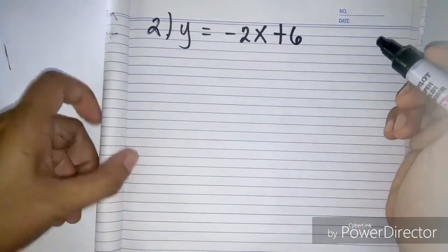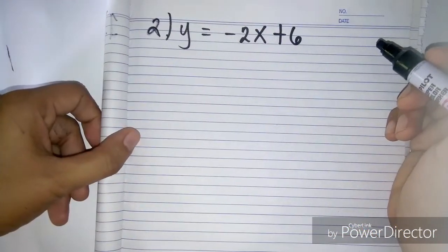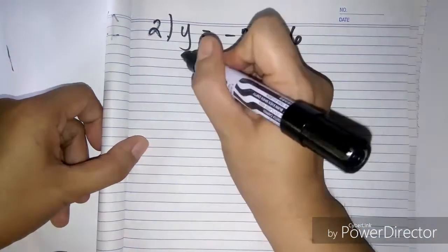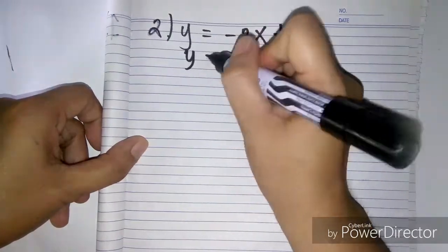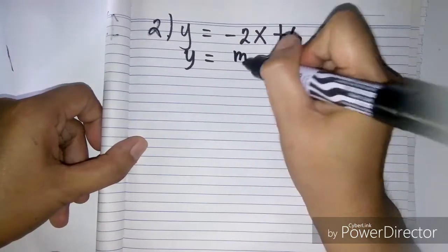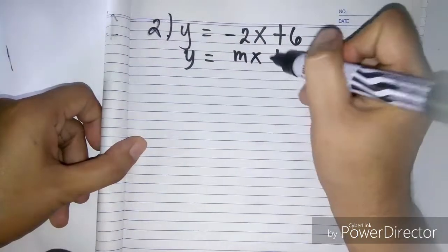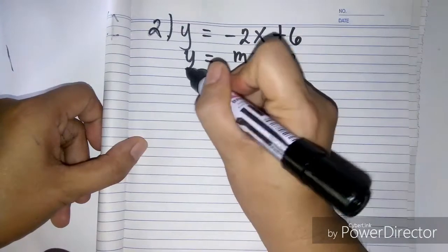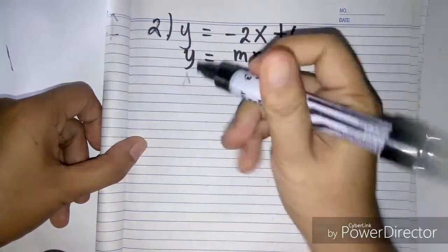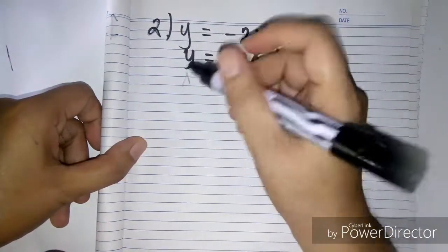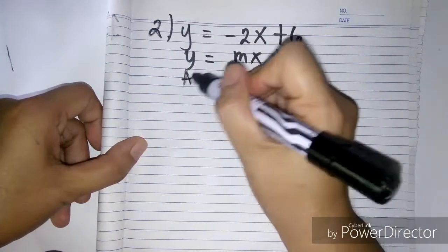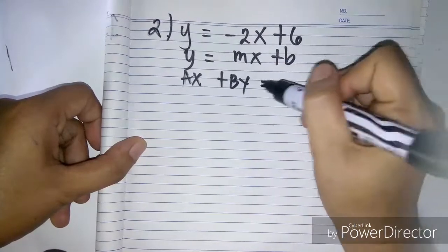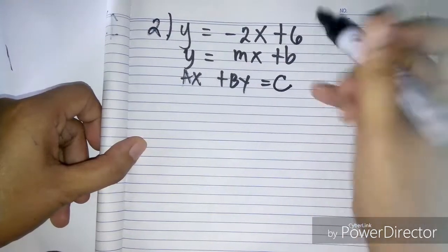Number two is y equals negative 2x plus 6. Again we have y equals mx plus b. In order to rewrite this equation into standard form, ax plus by equals c,